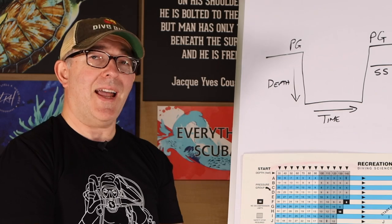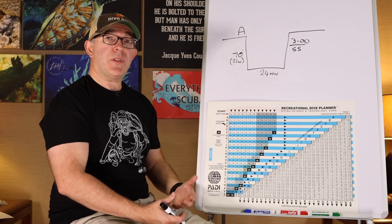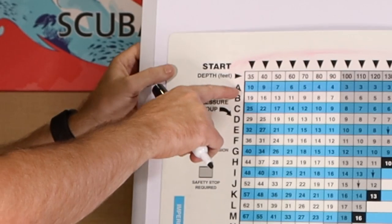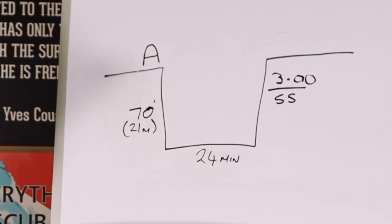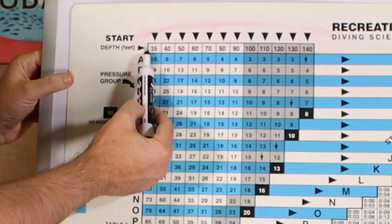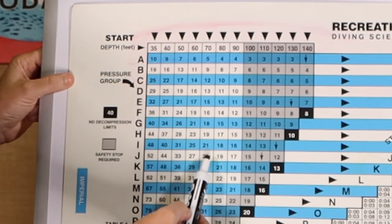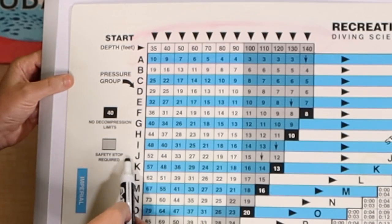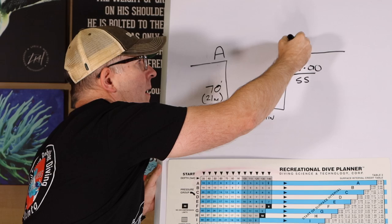Let's take a look at an actual example using the Recreational Dive Planner. In this example it's my first dive of the day, therefore I'm an A diver — pressure group A. I'm going to dive to 70 feet or 21 meters for 24 minutes. When we look at the Recreational Dive Planner, we find 70 feet, come down to 24 minutes, and come across to find our ending pressure group. I am now a K diver.